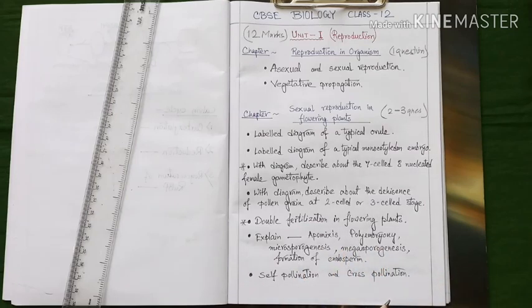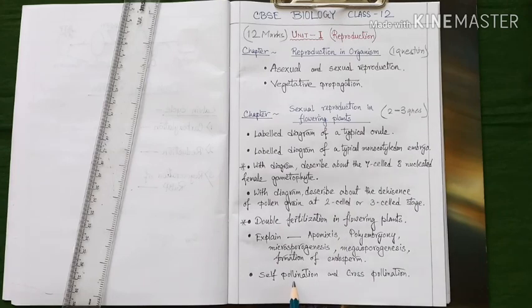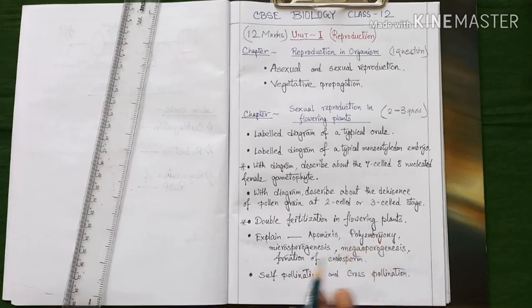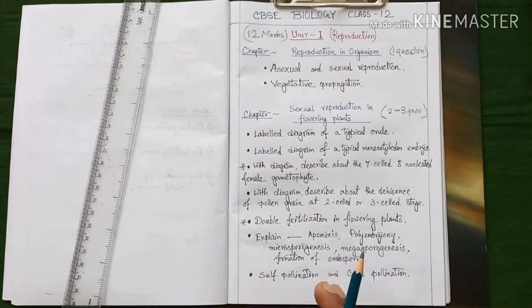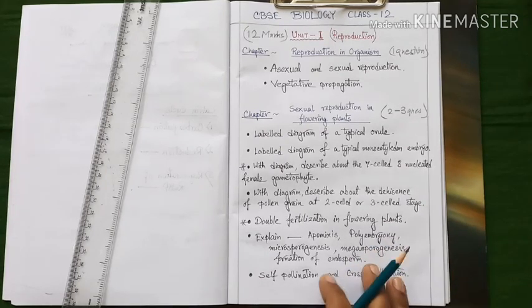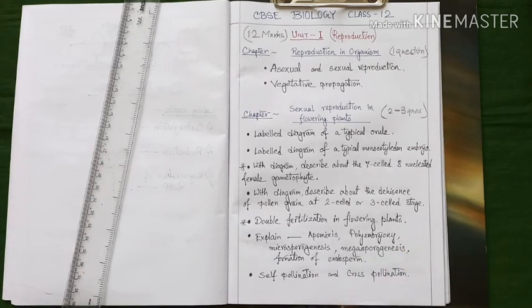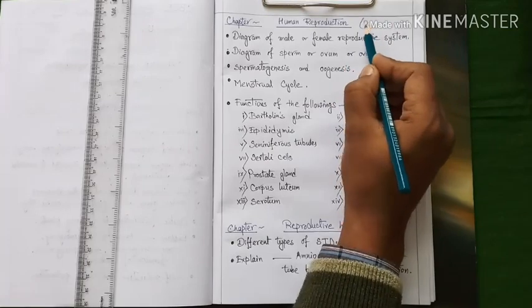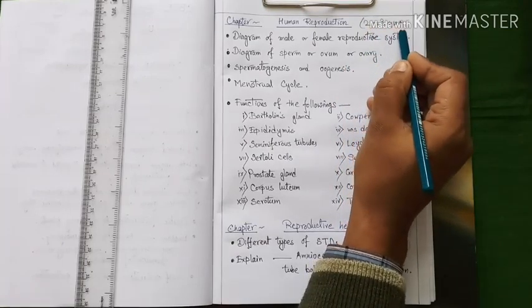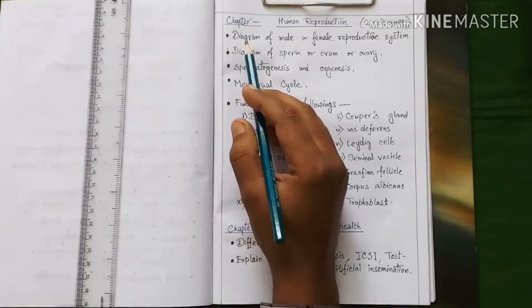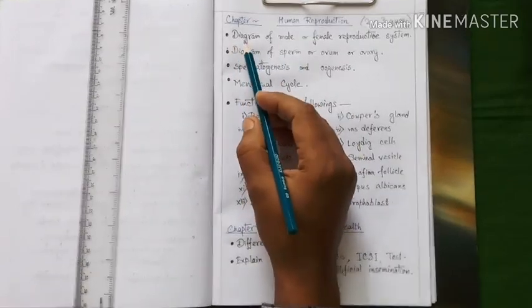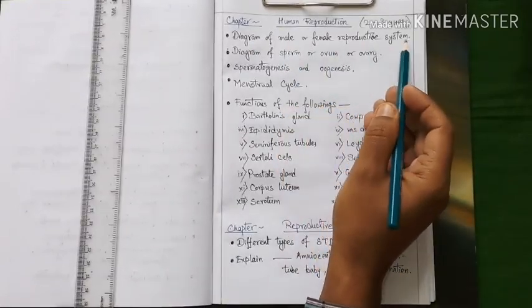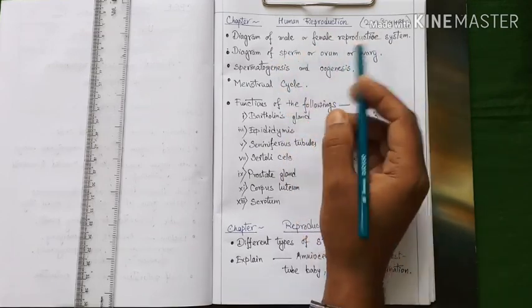Our next important topic is self-pollination and cross-pollination. Here also you have to study definition of self-pollination and cross-pollination, differences between them, different agents of cross-pollination, strategies evolved to prevent the self-pollination, etc. Our next chapter is human reproduction. You may expect two to three questions from this chapter. Our first important topic under this chapter is diagram of male or female reproductive system. You may get any one diagram in the exam.